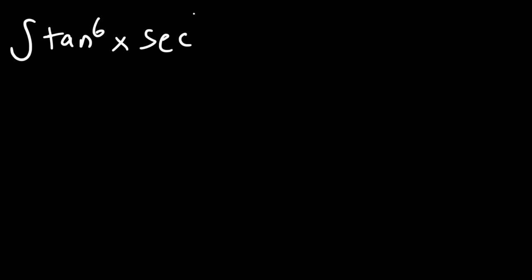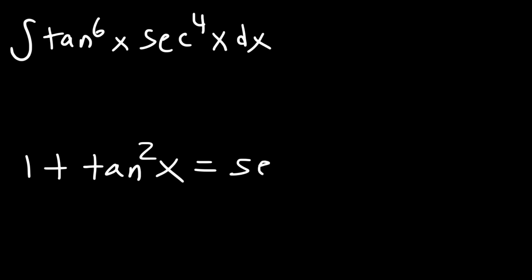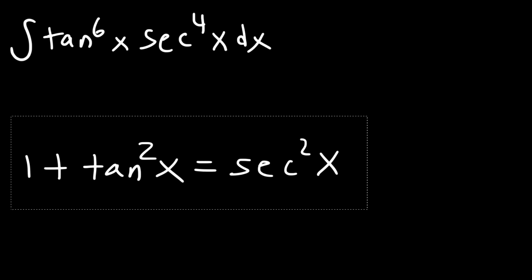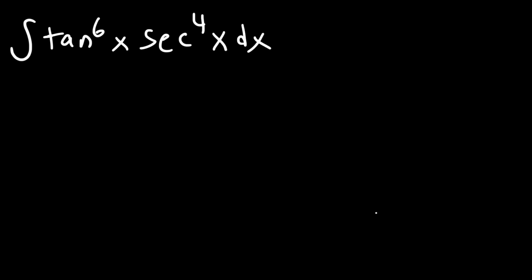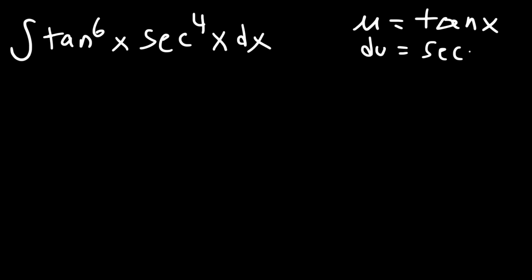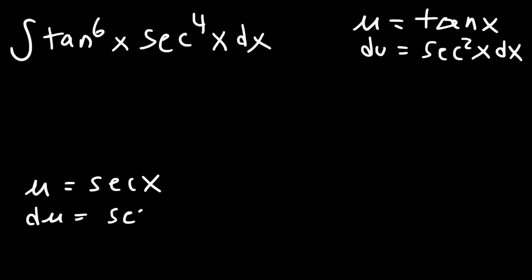Now let's try a problem with tangent and secant: find the antiderivative of tangent to the 6th power times secant raised to the 4th power. Some things to keep in mind: the derivative of tangent is secant squared, and the trig identity 1 plus tangent squared equals secant squared. We need to make u equal to tangent, so du is going to be secant squared dx. If we made u equal to secant x, du would be secant tangent, which makes the situation more complicated.